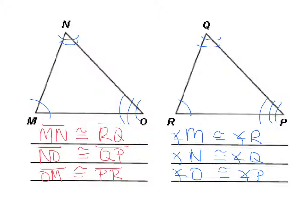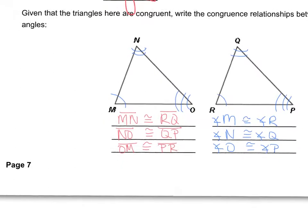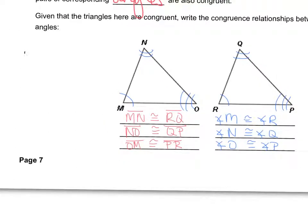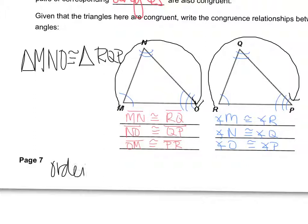Now if we wanted to state that these two triangles were congruent, the way we would write that is: triangle MNO is congruent to triangle — and here's where it gets tricky. When you're labeling congruent triangles, the order matters. So if I started at M, went to N, and ended at O, I have to go in that exact same order for the other triangle. Since I started at M, I now have to start at R, go through Q, and go to P. So triangle MNO is congruent to triangle RQP. The order matters.